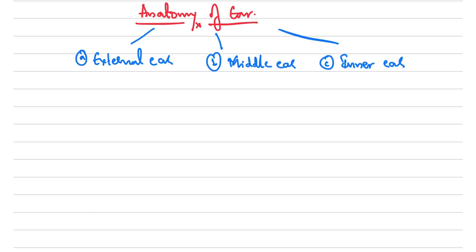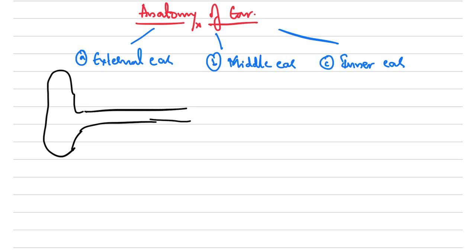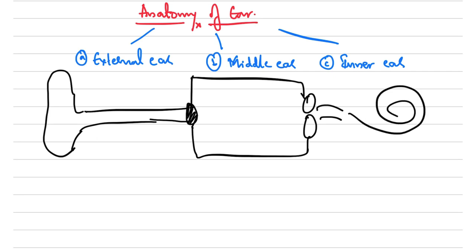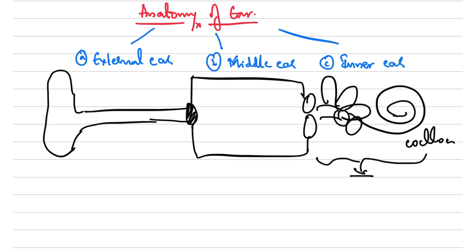The external ear begins with the pinna, followed by the external auditory canal, ending with the tympanic membrane. From the tympanic membrane up to the oval window and round window, this entire cavity forms the middle ear. From these windows to the basal coil — that is the cochlea — followed by the three semicircular canals and the utricle and saccule, this forms the inner ear.